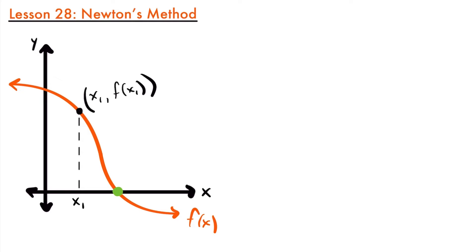Welcome back. Today we're going to be talking about Newton's method. Newton's method is a technique that we can use to approximate the zeros or the x-intercepts of a function. The x-intercepts of a function are essentially where the function crosses the x-axis, or where the y-value is zero.